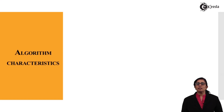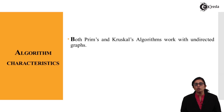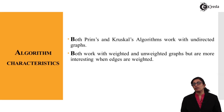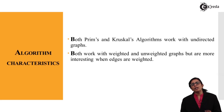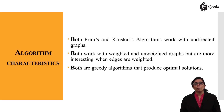Both Prim's and Kruskal's algorithms work on this undirected graph — these are the two major algorithms used to implement the minimum spanning tree. Both work with weighted and unweighted graphs, but the edges should ideally be weighted. Both are greedy algorithms and they produce optimal solutions.